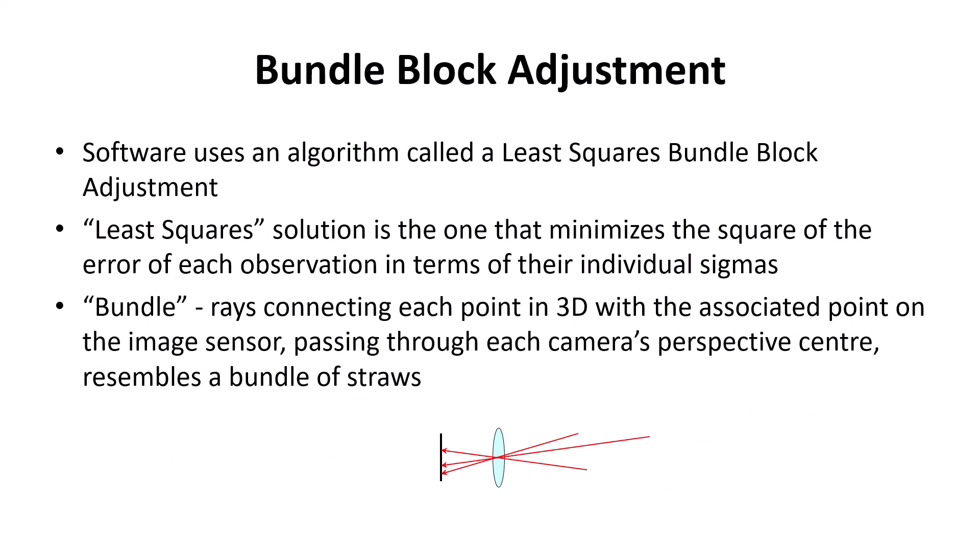The software uses an algorithm called the least squares bundle block adjustment. The least squares solution is one that minimizes the squares of error of each observation in terms of their individual sigmas. The 'bundle' refers to rays connecting each point in 3D with the associated point on the image sensor. Those red rays in the sketch below show light rays passing through a camera lens and being recorded on a sensor — the rays resemble a bundle of straws. Typically we are not just using three rays; we're using hundreds of rays to solve for the interior and exterior orientations of the camera.